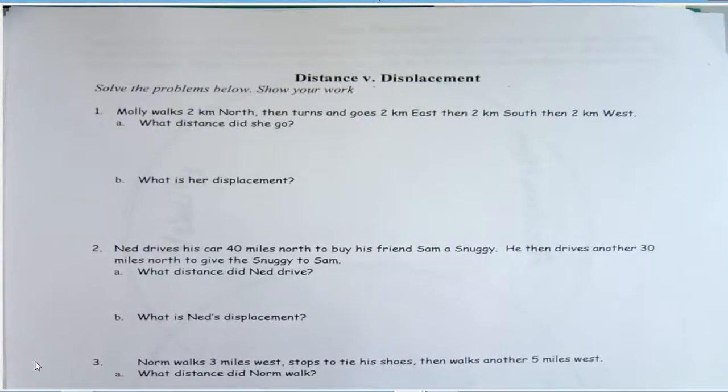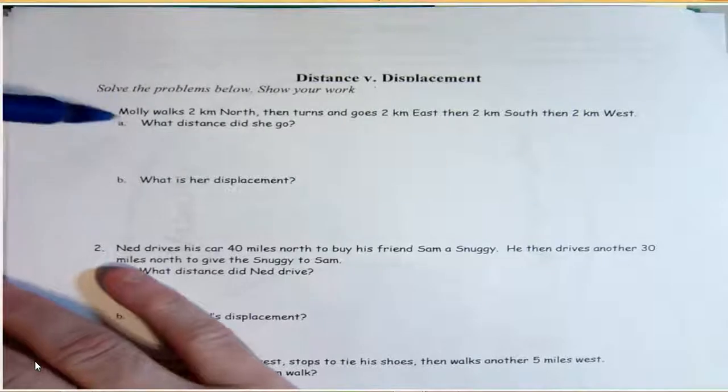So remember, distance is how far something travels in total. Displacement is essentially how far it traveled in one direction. Okay, so let's look at this question.